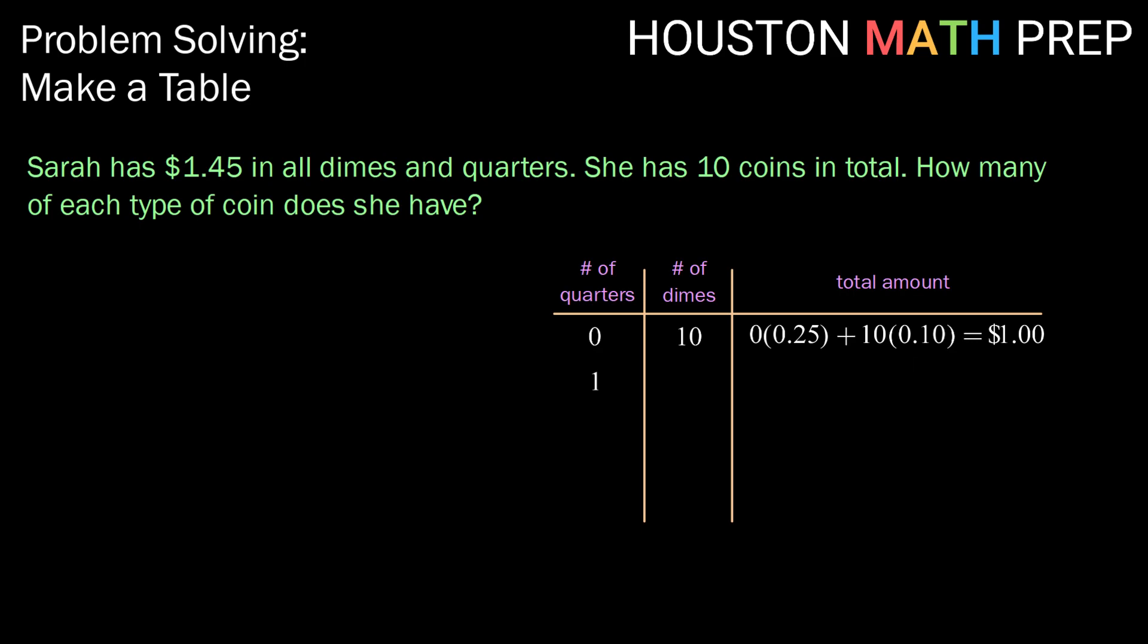Next, we could try, what if she has 1 quarter and 9 dimes for her total of $1.15. Still not the $1.45 that she needs. So, if we continue this pattern, we can see that 2 quarters and 8 dimes doesn't quite work.